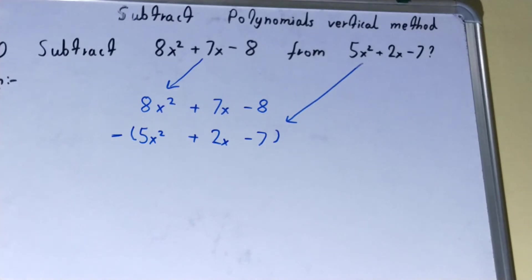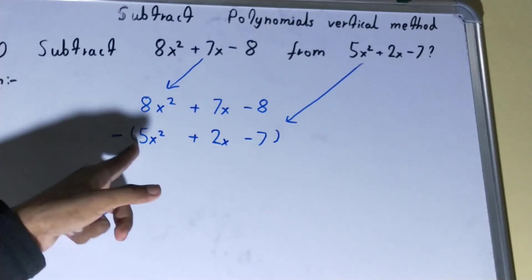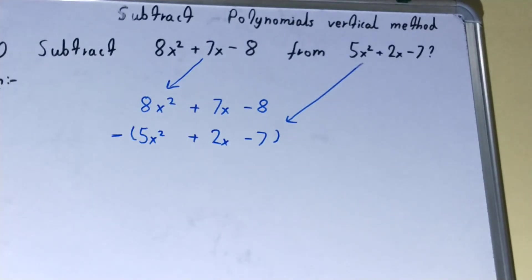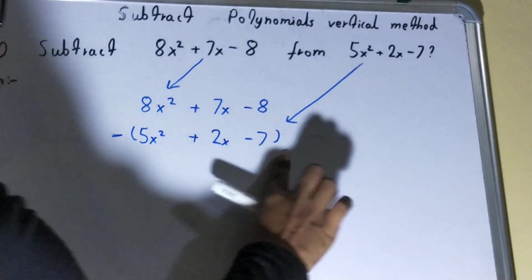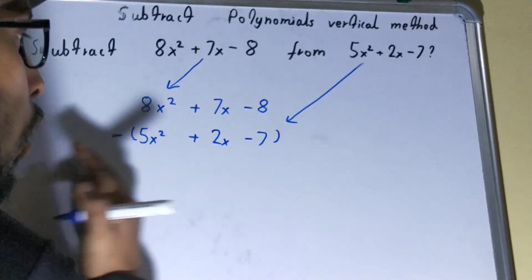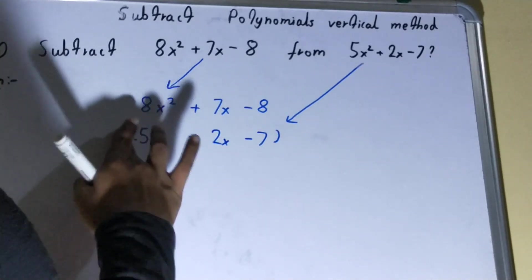This is where a lot of students make mistakes. If you are asked to subtract, they will just put the negative sign on the 5x² only, but that is wrong. This minus sign will be multiplied or distributed to all the terms.